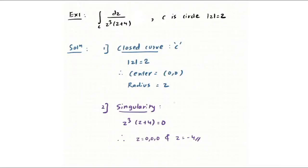In this video we will solve some hard problems on the Cauchy integral formula and theorem. Let us start with Example 1: the integral over C of dz divided by z³(z + 4), where C is the closed curve given by the circle |z| = 2.